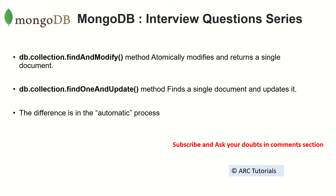The difference lies in the automatic process. With findAndModify, the update happens atomically. For example, if you have two parallel processes running and you try to find a document and then update it, in the meantime that document could be updated by some other operation — that's where findOneAndUpdate can go wrong. findAndModify directly updates the document, so you always know it is updating the correct version.